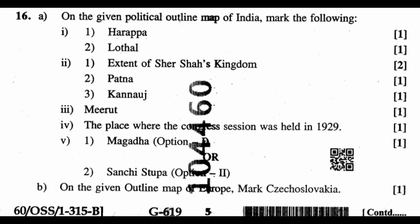Question 16a: On the given political outline map of India, mark the following: (1.1) Harappa, (1.2) Lothal, (2.1) Extent of Sher Shah's Kingdom, (2.2) Patna, (2.3) Kannauj, (3) Meerut, (4) the place where the Congress session was held in 1929, (5.1) Magadha, (5.2) Sanchi Stupa. Question 16b: On the given outline map of Europe, mark Czechoslovakia.